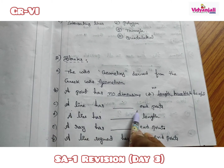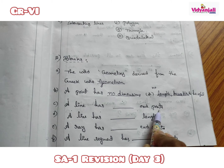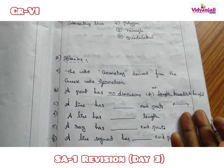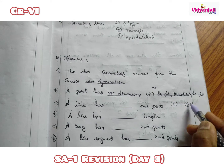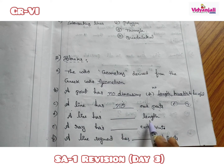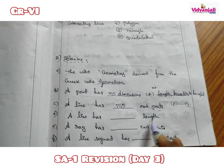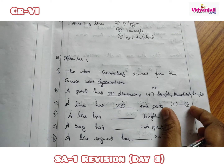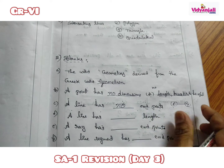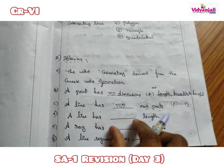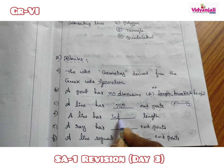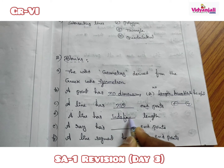A line has no end points — no ends at all. A line has indefinite length, meaning no fixed length. A ray has one end point, also called one initial point. A line segment has two end points and a fixed, definite length.